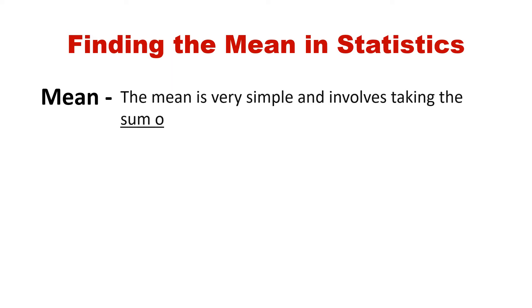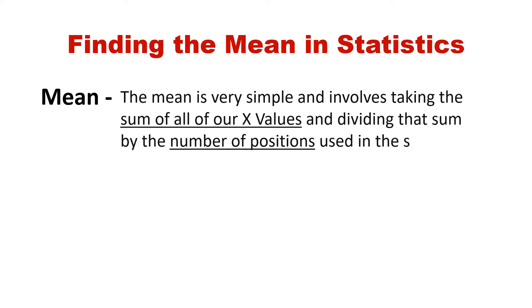It is very simple. It involves taking the sum of all of our x values and dividing that sum by the number of positions used in the set.